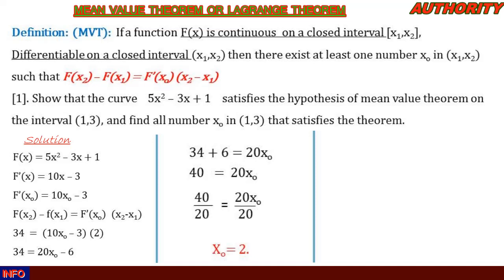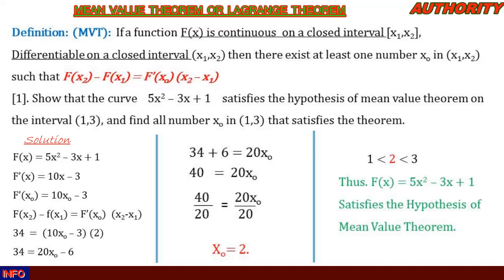Here we can see that in the interval (1, 3), we have obtained x0 = 2. And 2 is in the interval since 2 is greater than 1 but less than 3. Therefore, the function f(x) = 5x² − 3x + 1 satisfies the hypothesis of the Mean Value Theorem.